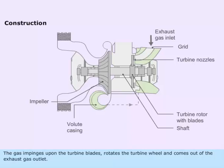The gas impinges upon the turbine blades, rotates the turbine wheel and comes out of the exhaust gas outlet.